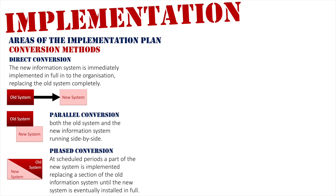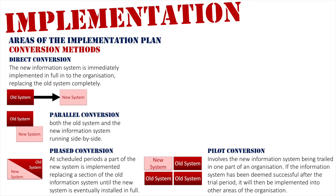Finally is a pilot conversion, where the new system is trialed in full in one part of the organization. If the system is deemed successful after a trial period — for example, three months — it will then be implemented into all other areas of the organization. For instance, if it's a department store like Big W, the kitchenware section might use the new system while all other parts use the old system, or the Sydney store uses the new system while Melbourne still uses the old one. Based on Sydney's findings after three months, Melbourne and all other stores would then adopt the new system.